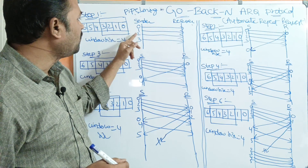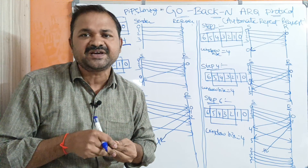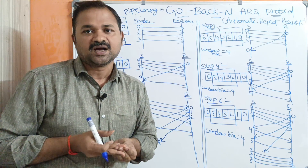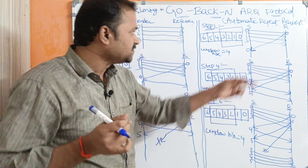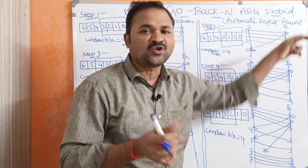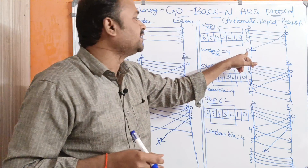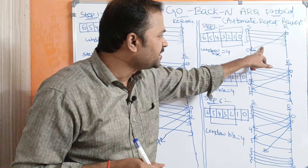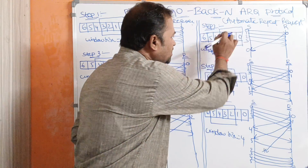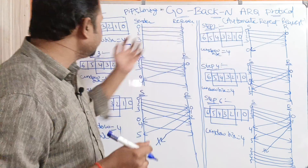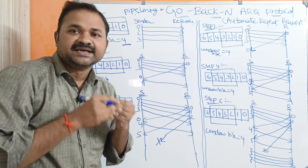It takes some time for the receiver to receive those frames. After some time, let us assume the receiver receives frame number zero. Upon receiving frame number zero, the receiver provides an acknowledgement to the sender. At this point there is no change in the window size — the window still contains four frames, from zero to three.